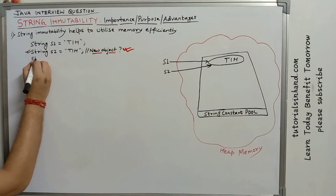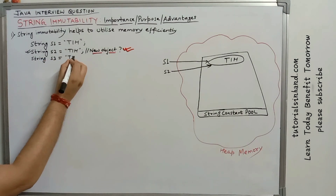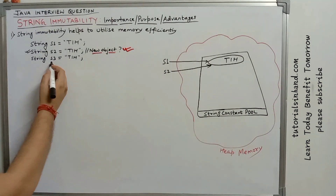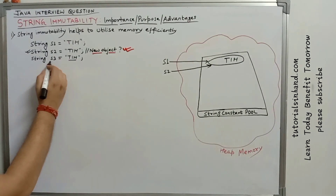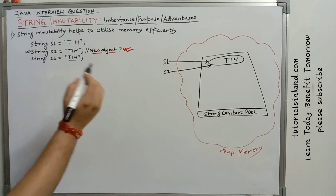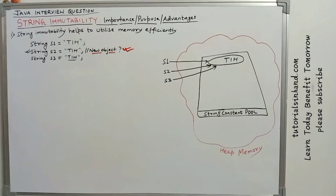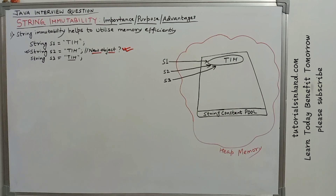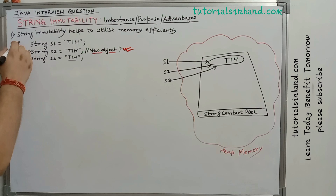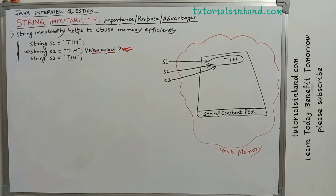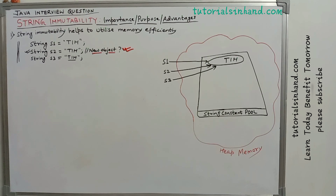Suppose again someone writes string s3 equals to 'tih' — the same will happen. A new object will not be created; it will see that 'tih' already exists, so s3 will also point to the same 'tih' object in the string constant pool. Now three references are pointing to the same object, saving memory. It is not creating unnecessary objects and just occupying memory space, and this helps to efficiently utilize the memory area.